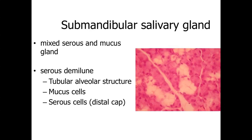The submandibular salivary gland is another example of a mixed serous and mucus gland, with more serous cells than what we'd see in the sublingual salivary gland. We can see good examples of darker staining serous cells and lighter staining mucus cells. What we can often see within the submandibular salivary gland are structures called serous demilunes — at the tip of the tubular alveolar structure, at the base of the test tube where we'd have the secretory region. Mucus-secreting cells are present, and then the serous cells form this demilune, a half-moon-like structure forming a cap at the very base of this test tube-like secretory region.